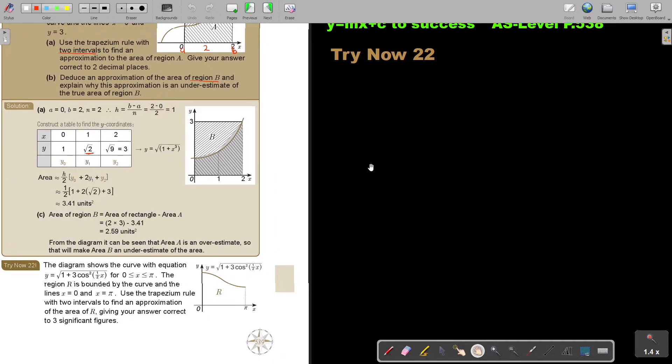I want you to stop the video and I want you to try now 22. You can continue the video as soon as you are finished. So the diagram shows the curve with equation, always good to first write the equation down. Actually quite challenging one due to the root and then 1 plus 3 cos squared and then a half X. And then they just tell you it's going from pi to 0. Now use the trapezium rule with two intervals to find the approximation of the area of R. Give your answer correct to three significant figures.